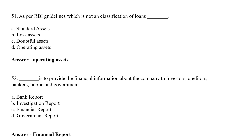The next question asks: what is used to provide financial information about the company to investors, creditors, bankers, the public, and the government? The correct answer is Option C — Financial Report.